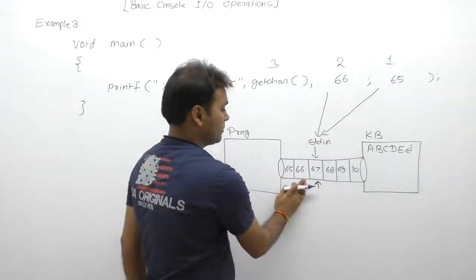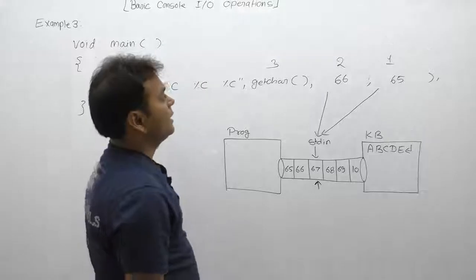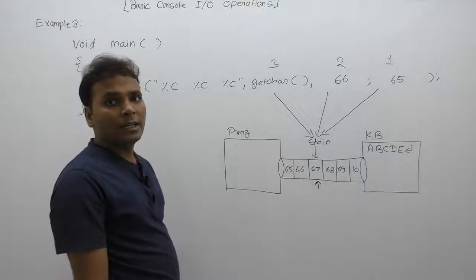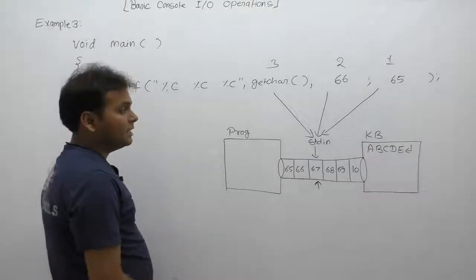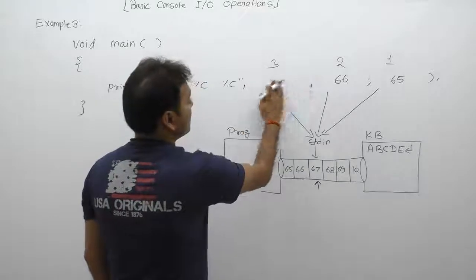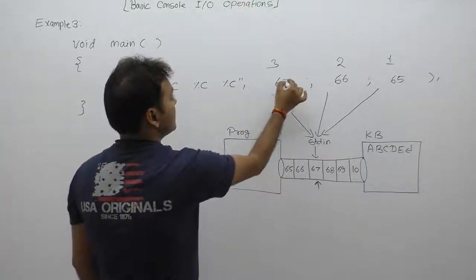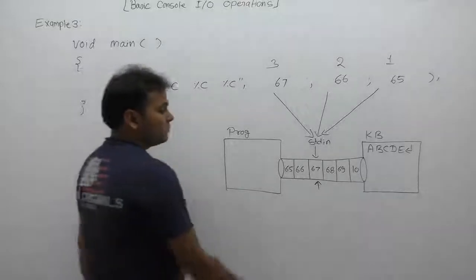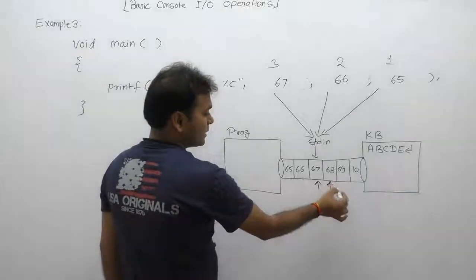Again we call the same getchar() function from standard input buffer. It will read ASCII value from the current byte, which is 67. Next one, finally the cursor will come to the next byte, 68.